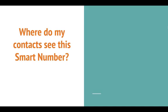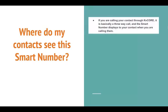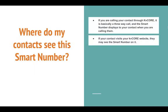Where do your contacts see this smart number? Your contacts will see this number if you are calling them through the KVCore mobile dialer or through KVCore — it is basically a three-way call and the smart number displays to your contact. Some agents give two numbers to their clients: one is the smart number and one is their agent number. They let clients know the smart number is their marketing number and how they will be contacting them.